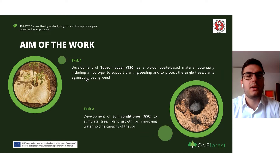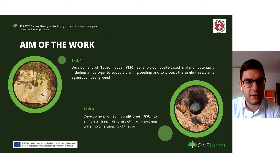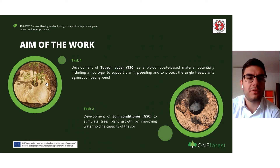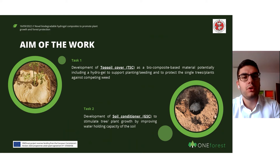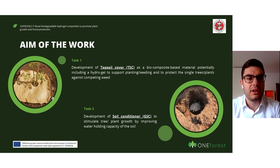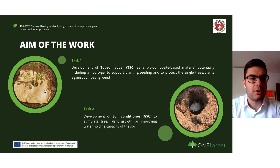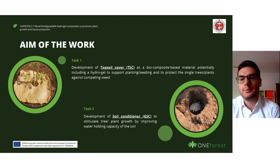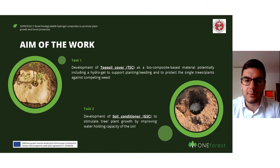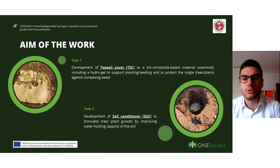The first product is called the topsoil cover. As you can see from the figure, it is a sort of mulching film placed at the base of a plant. It supports the plant during growth by protecting it from competing weeds — which can suffocate the young tree — and also by absorbing water and reducing water evaporation from the soil. The second product is a soil conditioner — a biodegradable material mixed with soil that absorbs water, stores it, and then releases it over time for the plant to use.